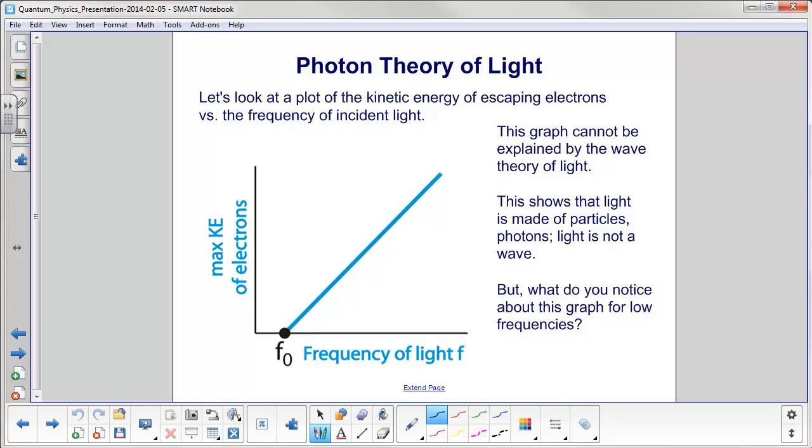Let's now look at a graph of the kinetic energy of the escaping electrons from the photoelectric effect. And here's the maximum kinetic energy here on the y-axis. And on the x-axis, we're going to plot the frequency of the light.